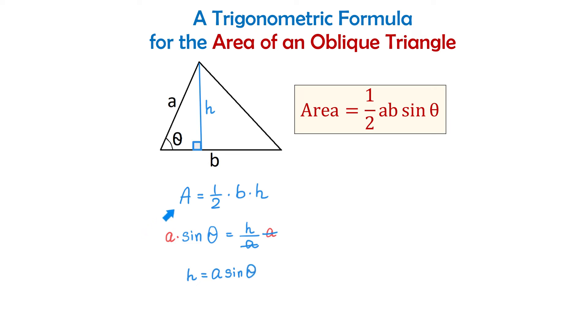Now in this formula for the area of a triangle we will replace h with a sine of θ. Then we will have A equals one half times b and now in place of h we will write a times sine of θ.